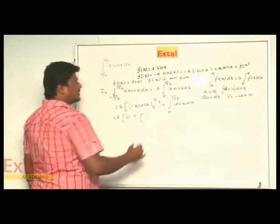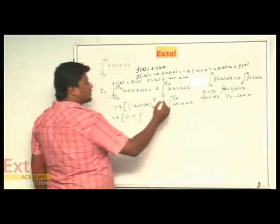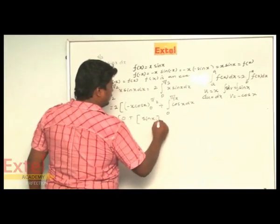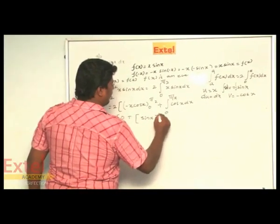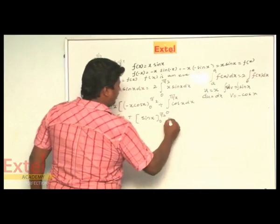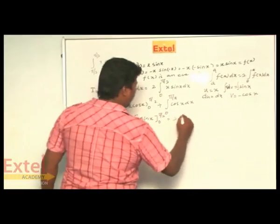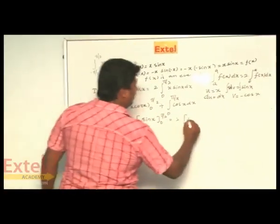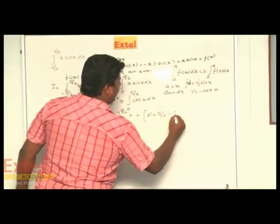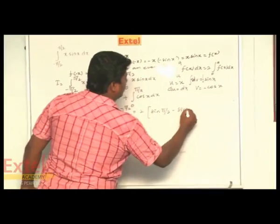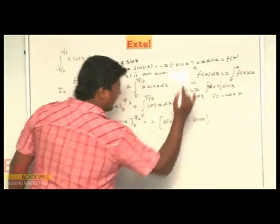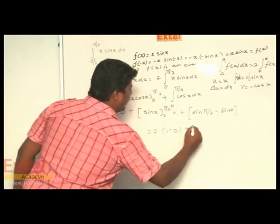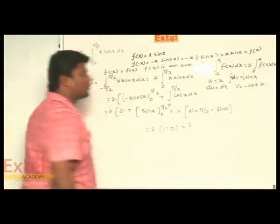Next, we integrate cos x. The integration of cos x gives sin x, evaluated from 0 to π/2, which is equal to 2 times of sin(π/2) minus sin(0). Since sin(π/2) is 1 and sin(0) is 0, we get 2 times of 1 minus 0, which is equal to 2.